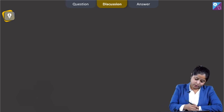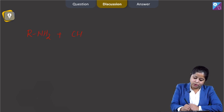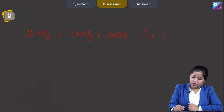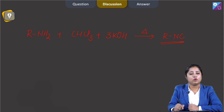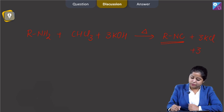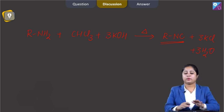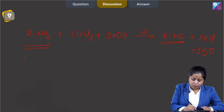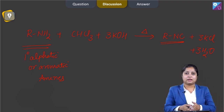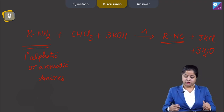The reaction is: RNH2 + CHCl3 + 3KOH → RNC (isocyanides, foul-smelling) + 3KCl + 3H2O. This reaction is given by 1° aliphatic or aromatic amines only. Tertiary or secondary (2° and 3°) amines will not give this reaction.